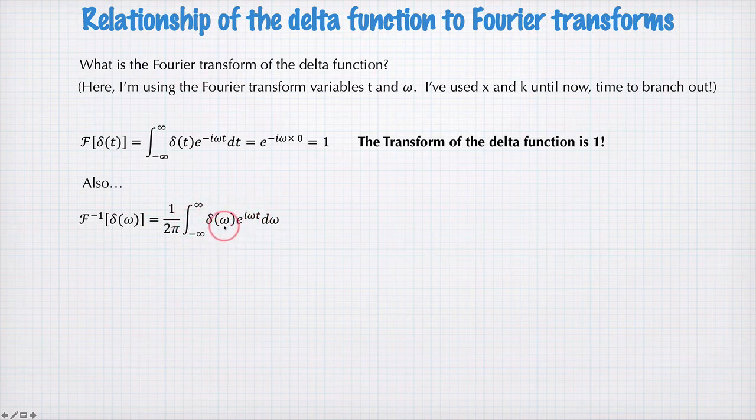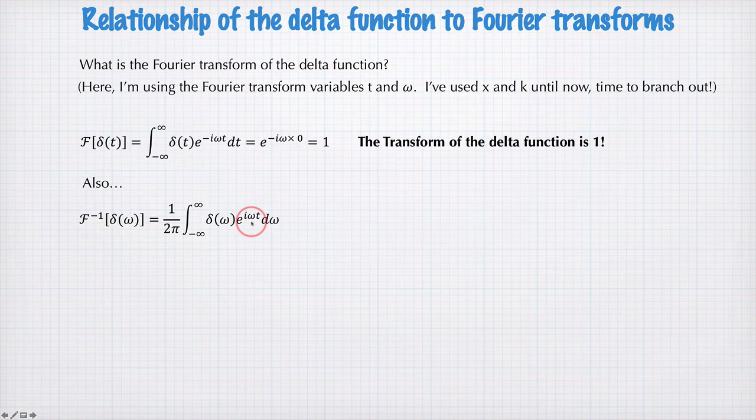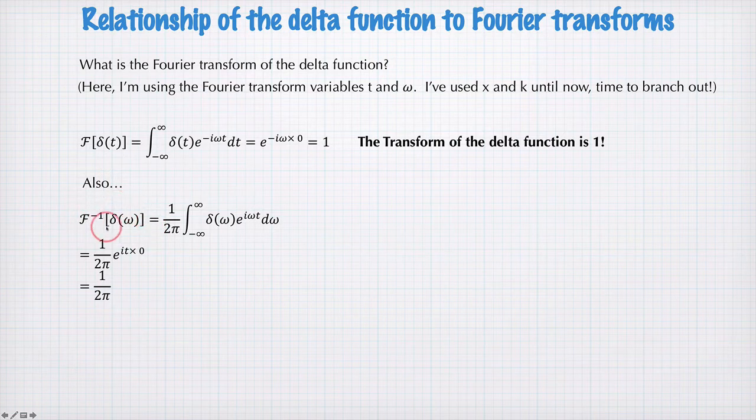Again, this integral is pretty simple because it selects out the value of this where omega is equal to zero. So that means the inverse Fourier transform of the delta function is equal to one on two pi.